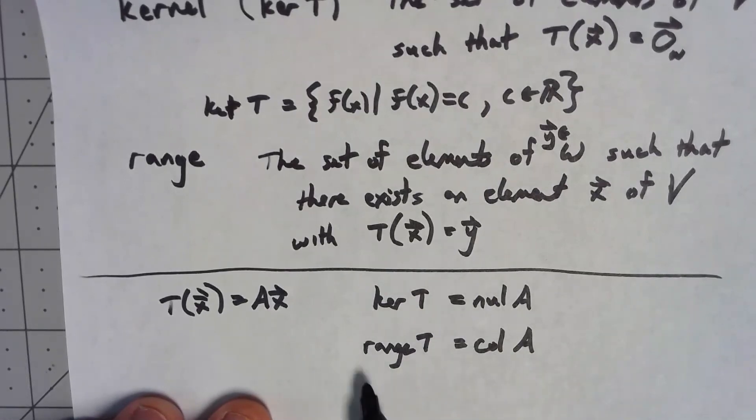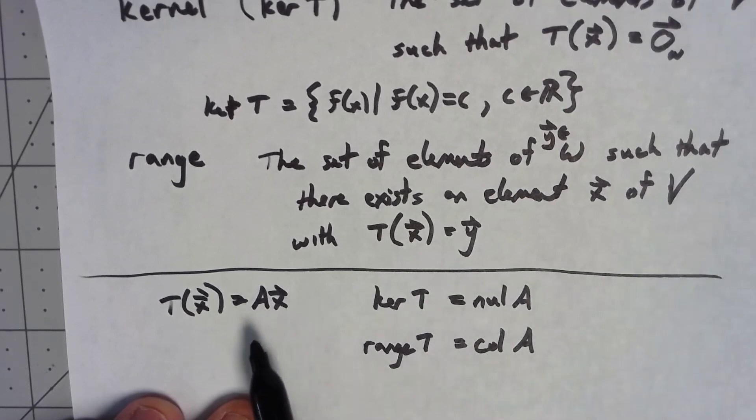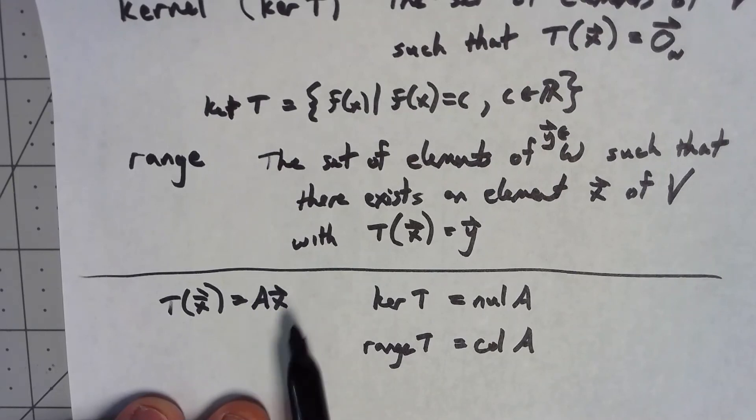Now the range and the column space, there's a little bit of a disjoint, an extra step in there. But remember that when I take a matrix times a vector, I'm really getting a linear combination of the columns of A. So the outputs of A x are the set of all linear combinations of columns of A, which is exactly what the column space of A is.